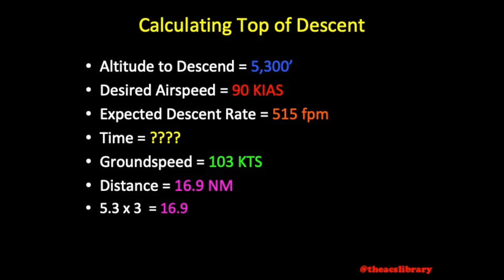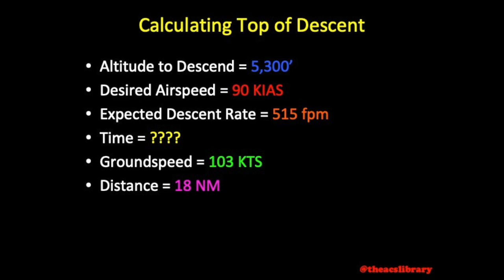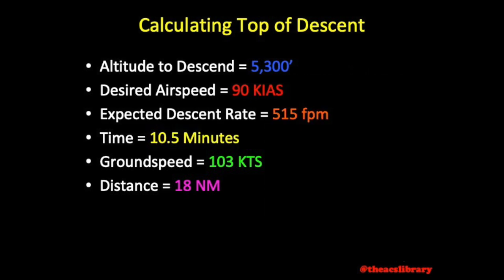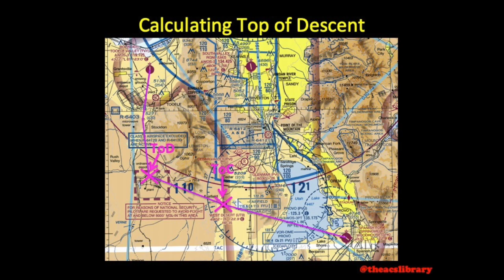After performing either method, an additional mile can be added as a buffer to account for pilot error maintaining airspeed or rate of descent. We will do this in the example, leaving us with a final distance of 17.9 nautical miles — we'll just say 18 nautical miles. We need to find our expected time spent descending. Using our E6B, we will align our ground speed of 103 with the indicator, only this time we will read time under expected distance. Based on 18 nautical miles, we find a time of 10 and a half minutes.